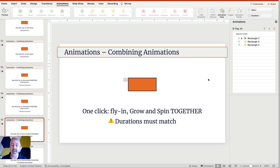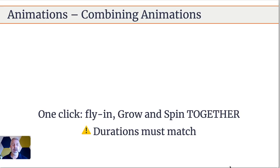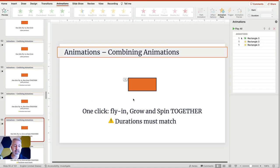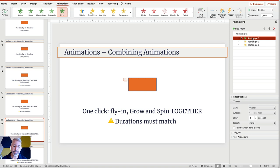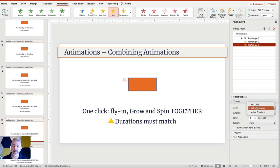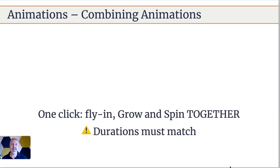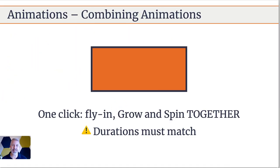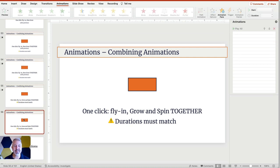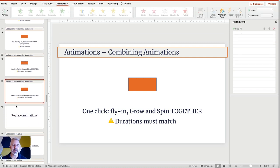We can get even more complicated by adding two effects simultaneously — not just flying in, but spinning as well. In the animation pane, we have appear, then grow/shrink set to with previous, and then another effect also set to with previous. We make sure all durations are set to one second so they all match, and when you watch the animation it all happens together and feels natural. There are lots of options for making that work for your animations.